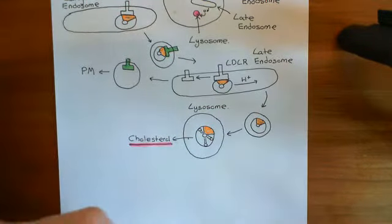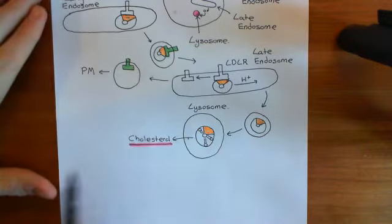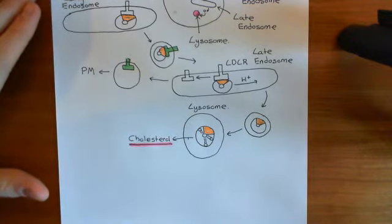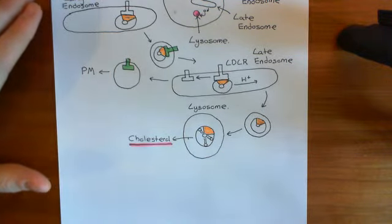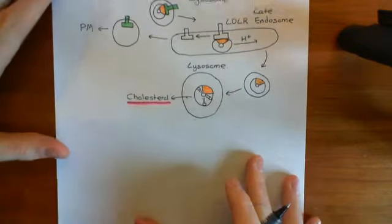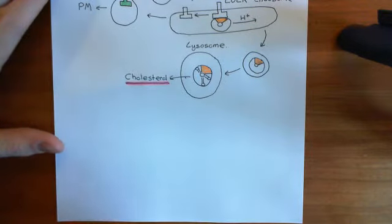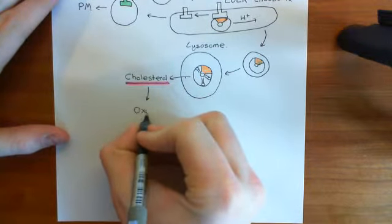We can now reconverge the two pathways. LDL is delivering cholesterol into hepatocytes, and HDL is also delivering cholesterol into hepatocytes — delivering its cholesterol esters from its core, which are then broken down to free cholesterol. So both of these pathways are dumping cholesterol into the hepatocyte cytoplasm.